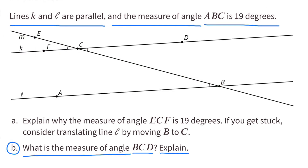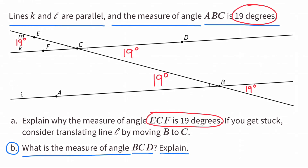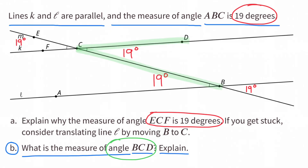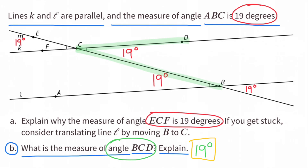B: what is the measure of angle BCD? Explain. Angle BCD is an alternate interior angle of angle ECF. Since angle ECF is 19 degrees, angle BCD will also be 19 degrees. I went ahead and labeled all the angles with the measure of 19 degrees.